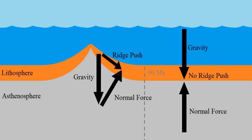Ridge push is the result of gravitational forces acting on the young, raised oceanic lithosphere around mid-ocean ridges, causing it to slide down the similarly raised but weaker asthenosphere and push on lithospheric material farther from the ridges.